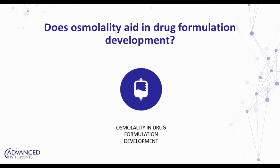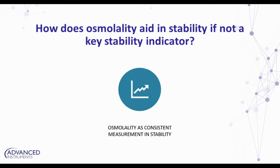Last but certainly not least, let's talk about the area of stability. Tara, could you talk about the consistency of an osmolality measurement and how it pertains to this really critical area of testing? It really is one of the things you can rely on with the osmolality measurement — there's not a lot of room for analyst error. So if we get a measurement that's out of spec or out of tolerance, it's pretty likely to be a rational result. I can instantly think of two examples where osmolality measurement helped us during an investigation into out-of-tolerance values during a stability study.